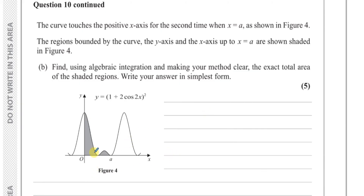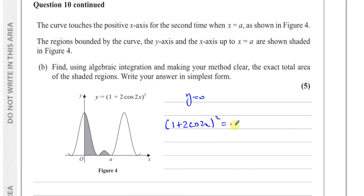We need to find where this curve touches the x-axis — that is, where y = 0. It's easier to use the original form: set (1 + 2cos2x)² = 0, find the values of x, and then integrate to find the area.